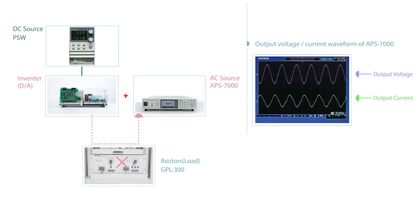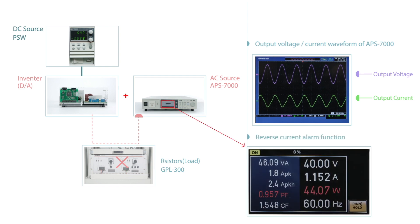When removing the load instantly, the APS-7000 will directly receive the current from inverters. The APS-7000 switches the output current to current sink and the phase between voltage and current changes from 0 degrees to 180 degrees. The APS-7000 can help users to evaluate the output characteristics of the inverter through red numeric readings.